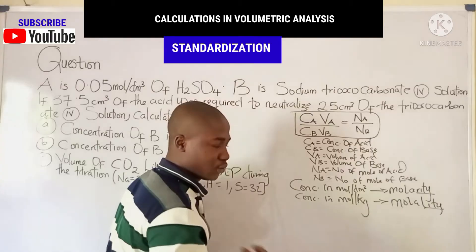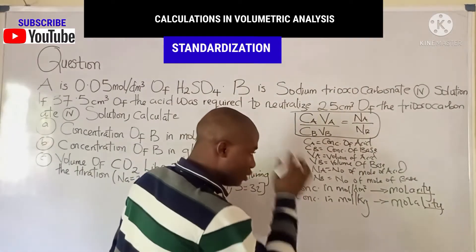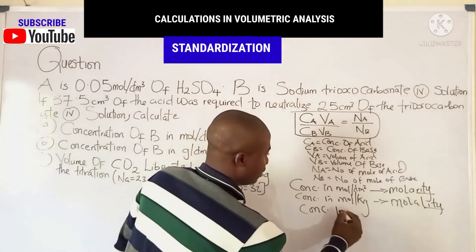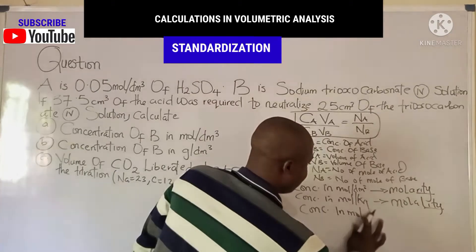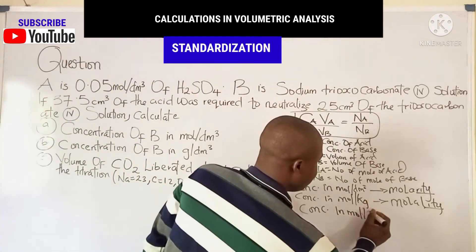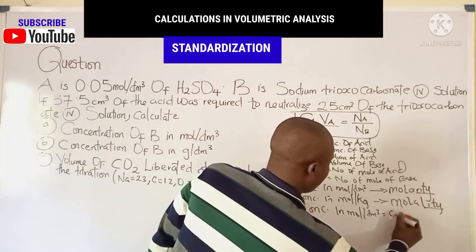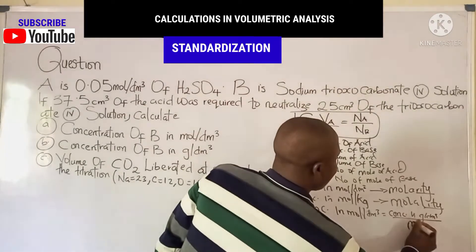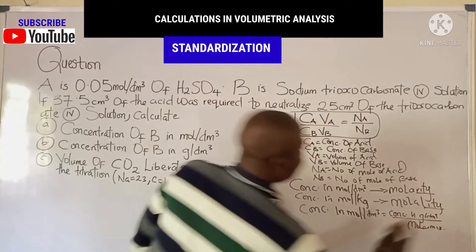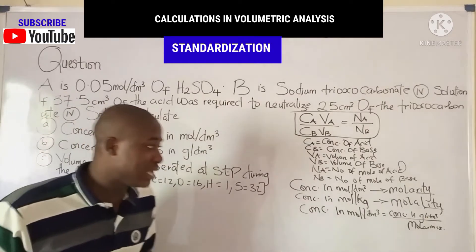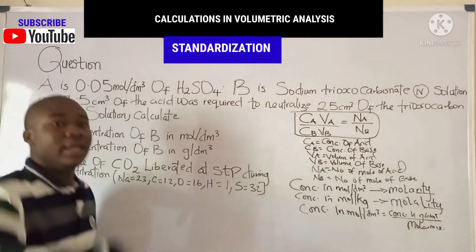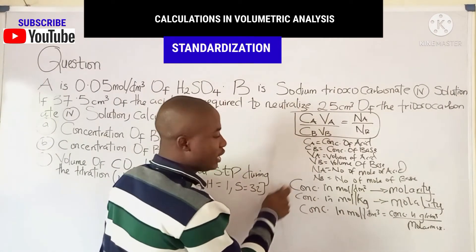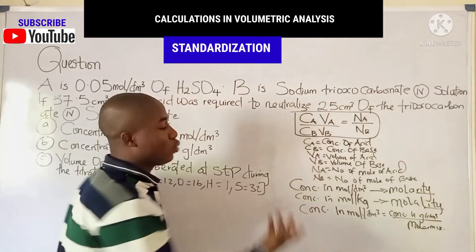To get concentration in grams per dm³, you must first know the concentration in moles per dm³. The formula is: concentration in grams per dm³ equals concentration in moles per dm³ times molar mass. You rearrange this as needed — it is very important for solving concentration in grams per dm³.